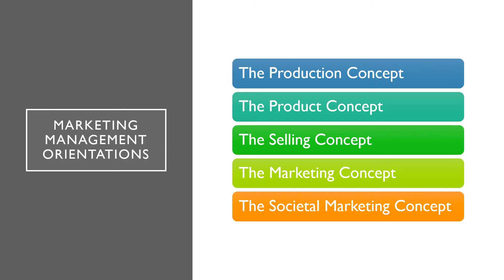Marketing management orientation. There are five alternative concepts under which organizations design and carry out their marketing strategy: the production, product, selling, marketing, and societal marketing concepts. The production concept holds that consumers will favor products that are available and highly affordable. Therefore, management should focus on improving production and distribution efficiency. This concept is one of the oldest orientations that guides sellers.